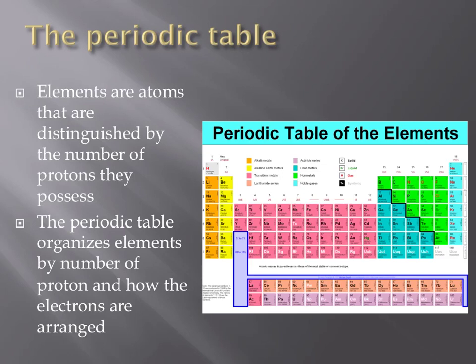The number of protons that an atom possesses determines what type of atom, or element, is being discussed. The periodic table, shown to the right, orders elements according to the number of protons and how the electrons within that atom are arranged. Elements in different groups, or columns of the periodic table, contain similar properties.